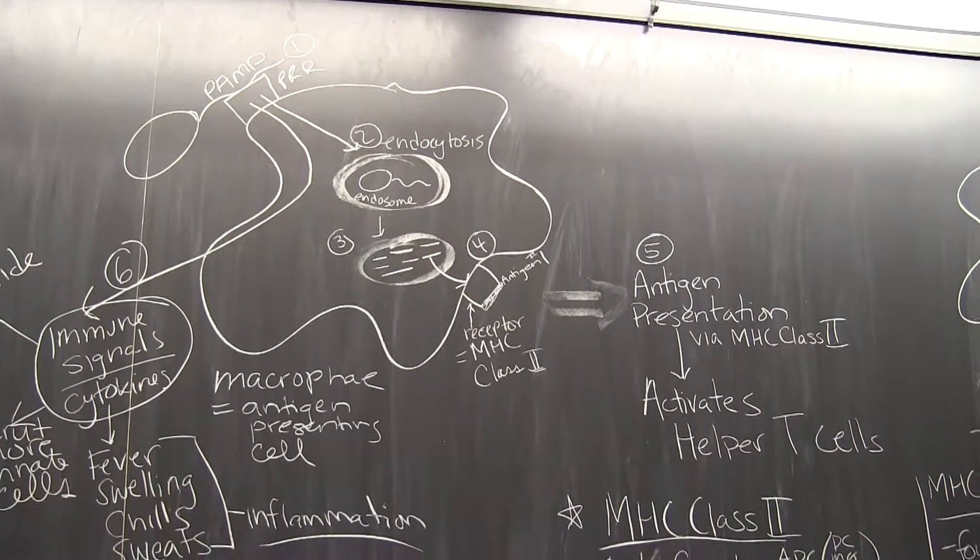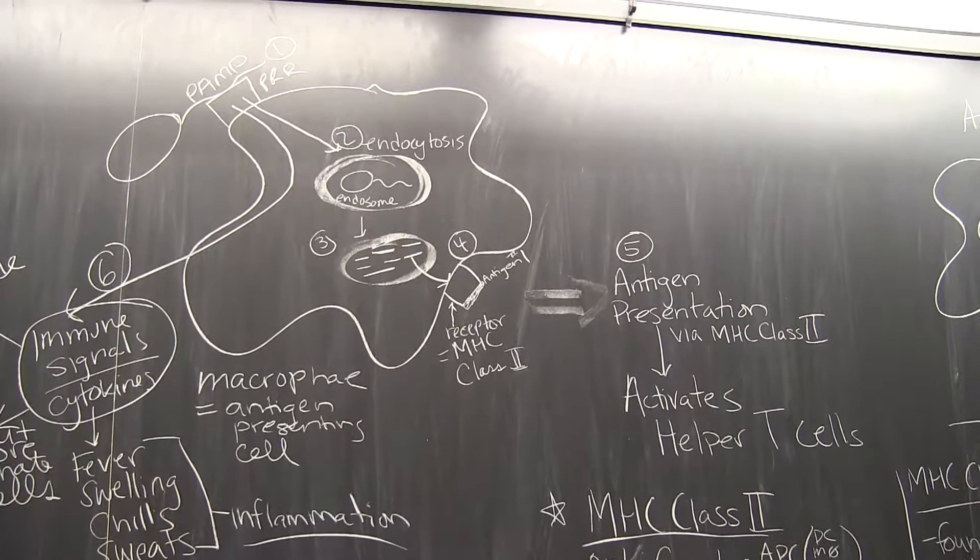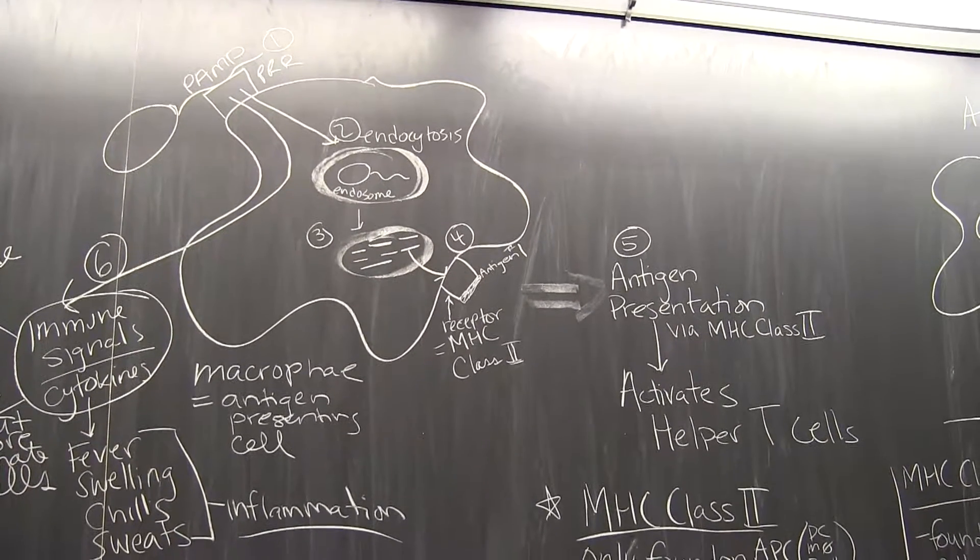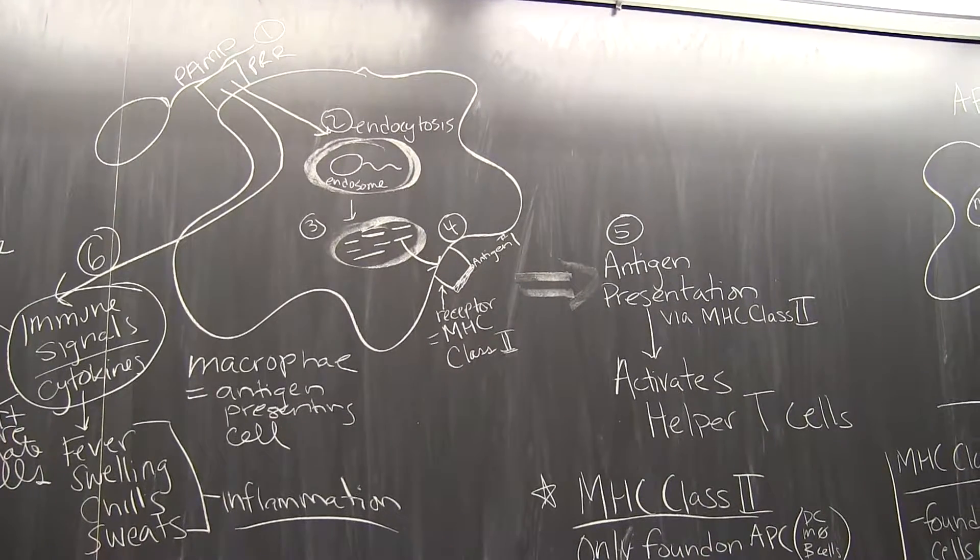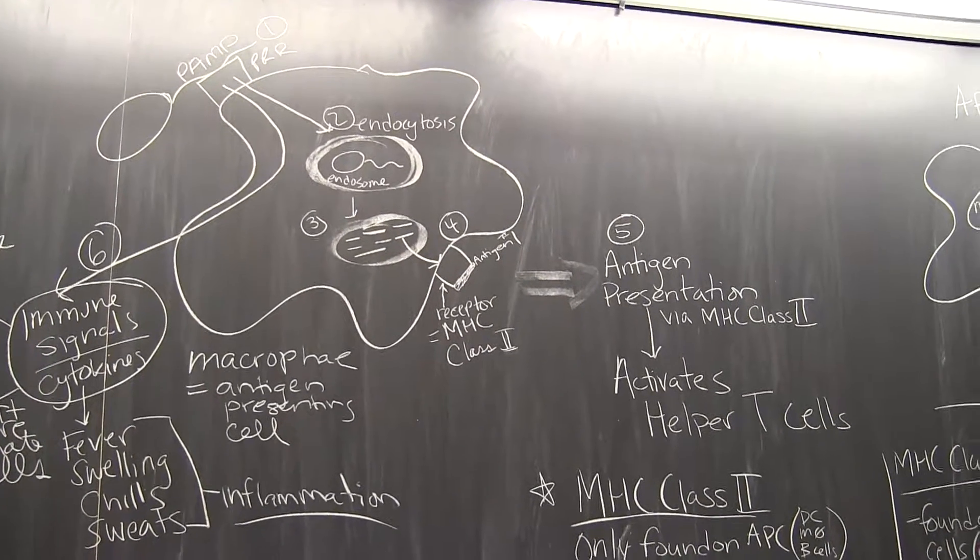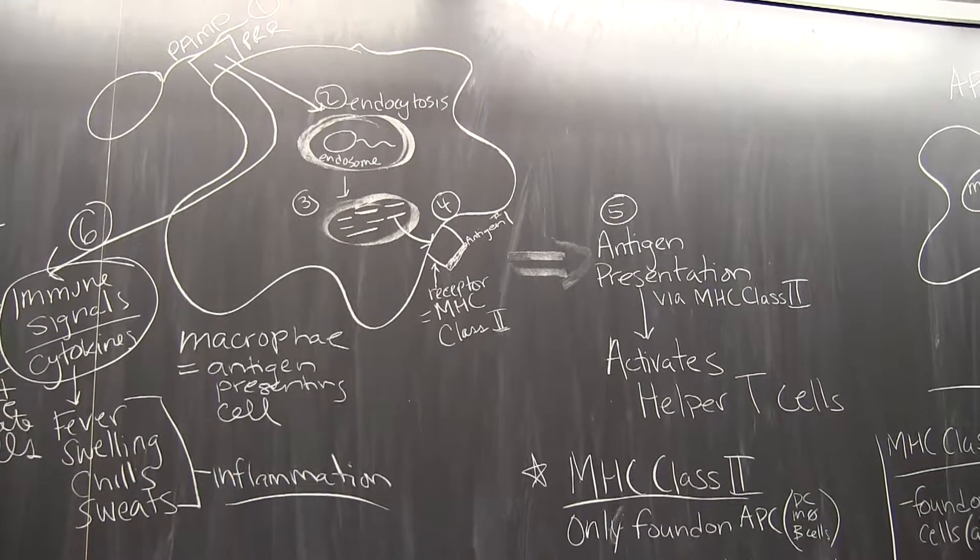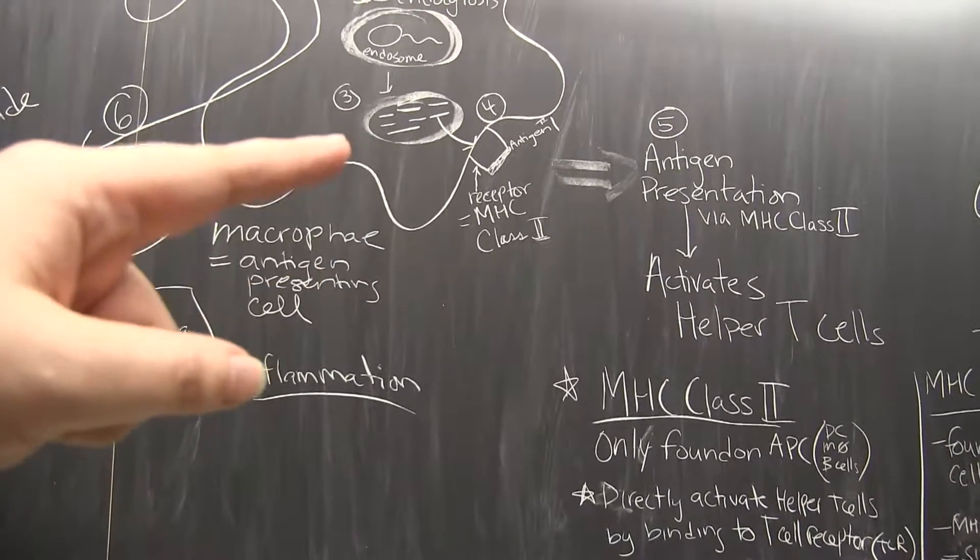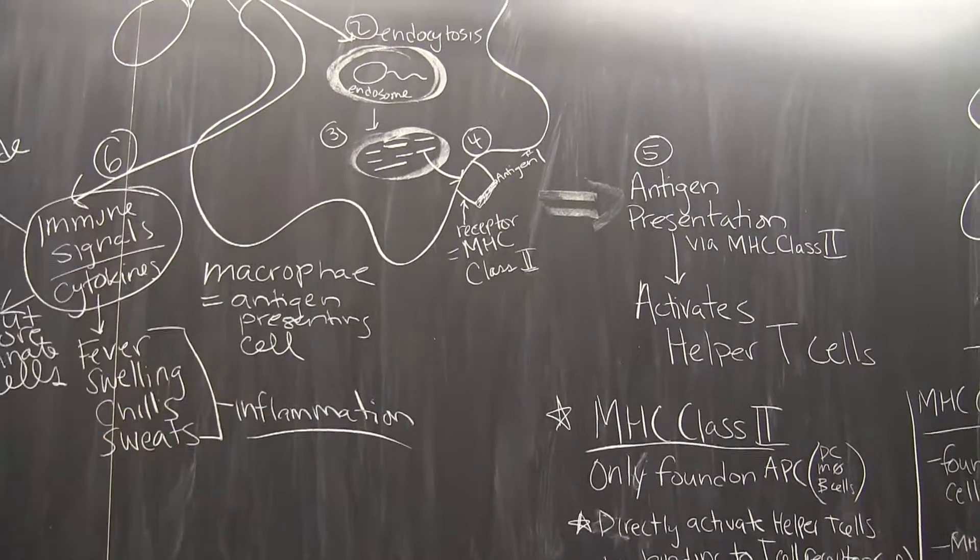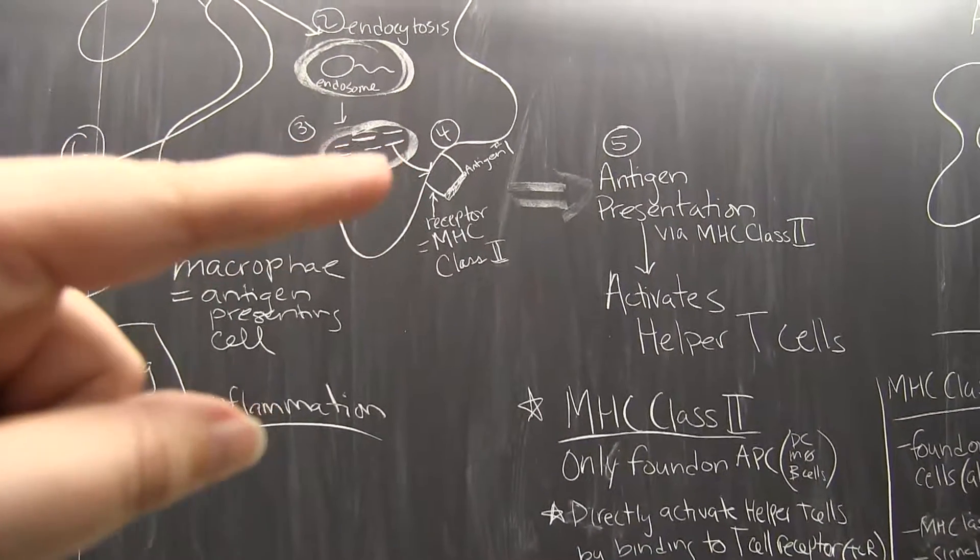is that we have endocytosis, which is similar to phagocytosis, but it's bringing in of the pathogen inside the cell into a specialized compartment called the endosome. Inside this compartment, the pathogen is broken down into all these little bits. And these are all the different antigens that we could have. So I've shown here, step number four,